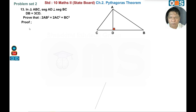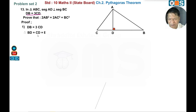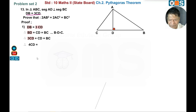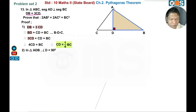Given: DB is equal to 3 times CD. BC is nothing but DB plus CD. Substituting: 3CD plus CD equals BC, so 4CD equals BC, therefore CD equals one-fourth BC. In triangle ADB, angle D is 90 degrees. By Pythagoras theorem: AB square equals AD square plus BD square.